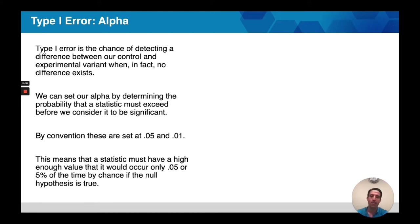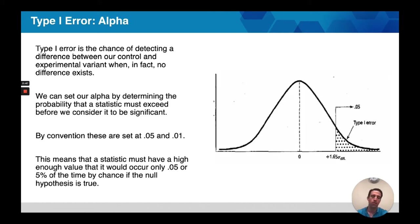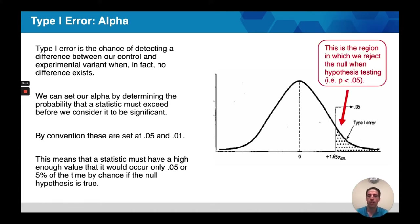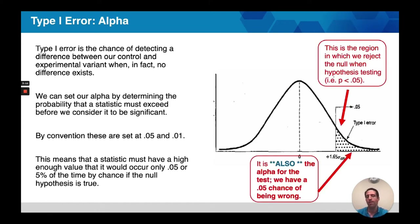What this means is that we have to exceed that value. So if we set it at 0.05, which is often the standard, we would have to exceed that value 5% of the time in order for our null hypothesis to be true. If we represent this on a curve, the curve represents essentially all possible outcomes for a test. Some outcomes are really likely and make up the center portion, others are less likely and make up the tail. The type 1 error is that portion of the curve beyond our threshold — in this case 0.05. This is the region where we reject our null hypothesis, but it's also our alpha, our chance of being wrong.